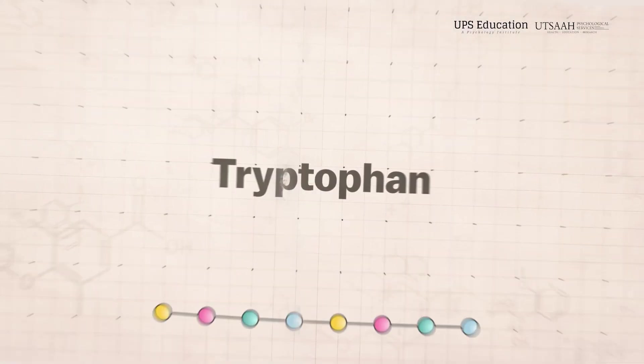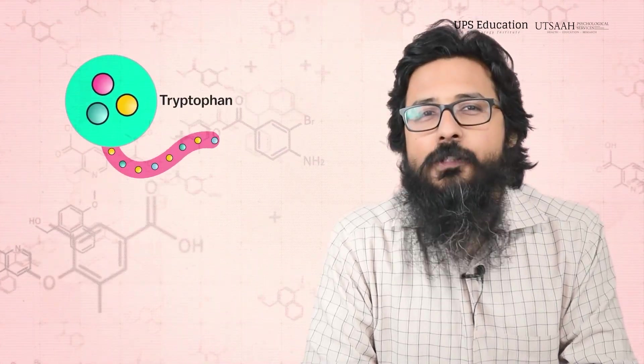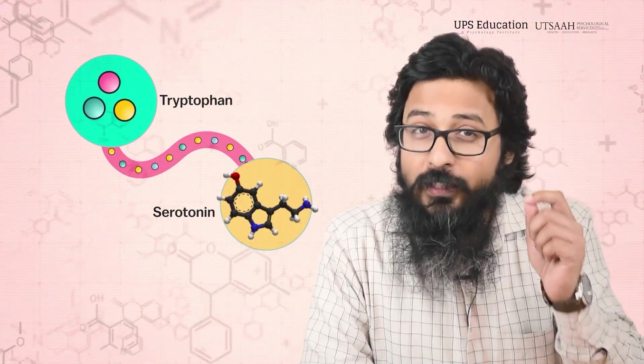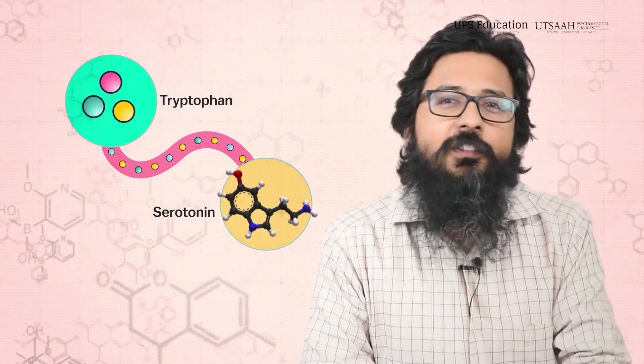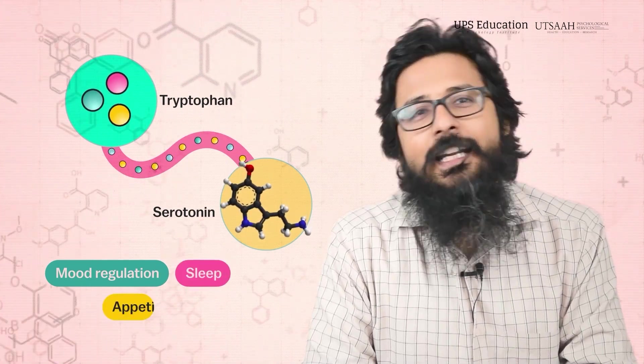Some amino acids are responsible for the generation of neurotransmitters that influence psychological processes. Number one: tryptophan. Tryptophan is an essential amino acid that helps in the production of serotonin. Serotonin is a neurotransmitter associated with mood regulation, sleep, and appetite. Deficiencies in tryptophan can potentially affect mood and contribute to conditions like depression.